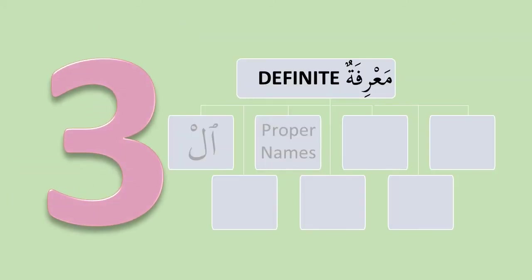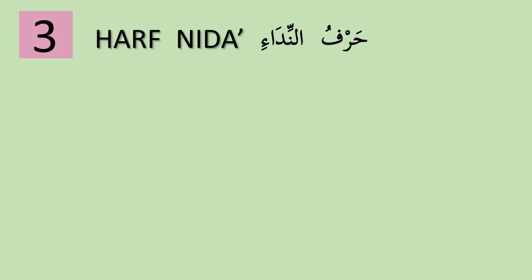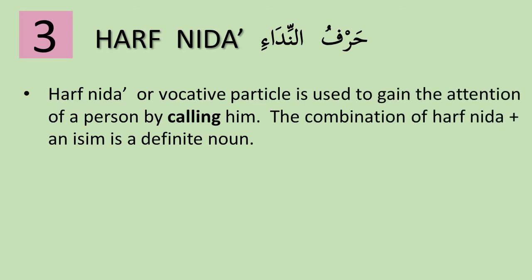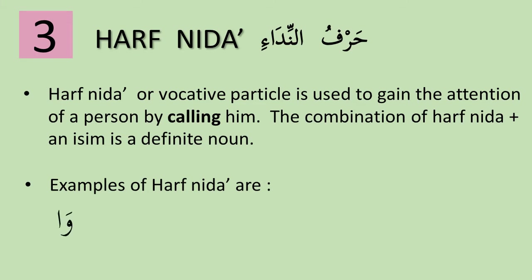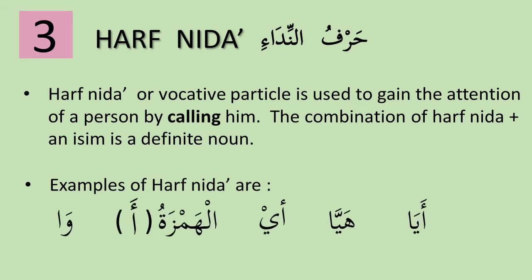The third group of isim ma'rifah is any isim which comes after harfu nida'. Harfu nida' is a particle used to gain the attention of a person by calling or addressing them — nowadays equivalent to calling out 'hey' or 'yo.' The combination of harfu nida' and the isim which follows it is a definite isim or isim ma'rifah. There are many harfu nida', but we will focus on ya, the one most often mentioned in the Quran.